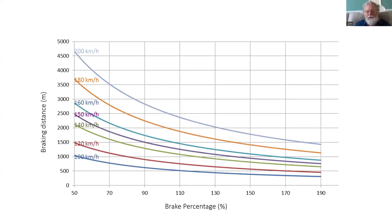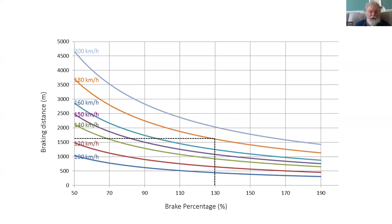Looking at UIC 544, we see a set of curves for different speeds against the distance to stop. So if we have a train travelling at 180 kilometres per hour and it takes about 1700 metres to stop, we can read off from the graph that the brake percentage is 130%. In other words, that vehicle or train can brake at more than 100% of its own weight and stop within the specified distance.